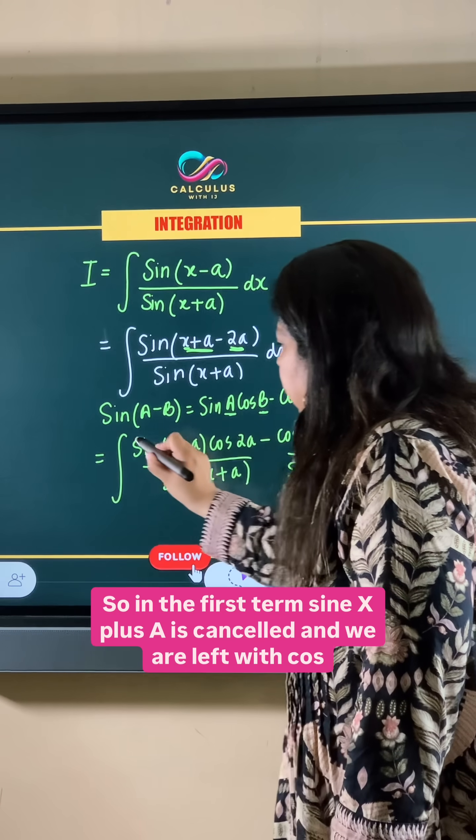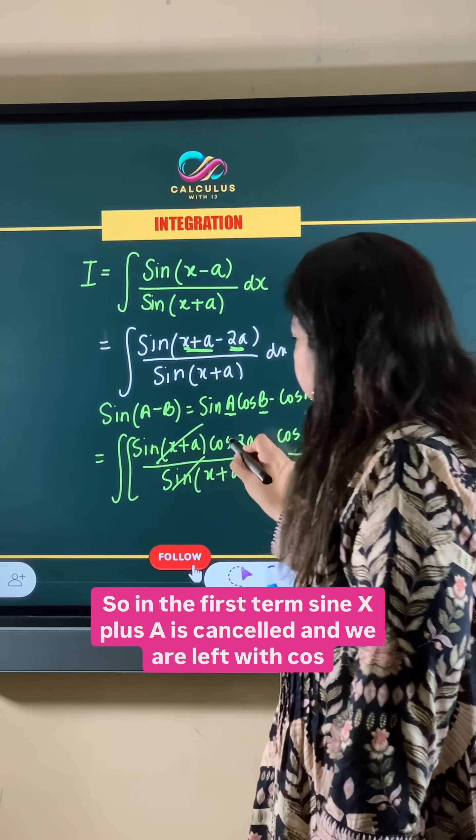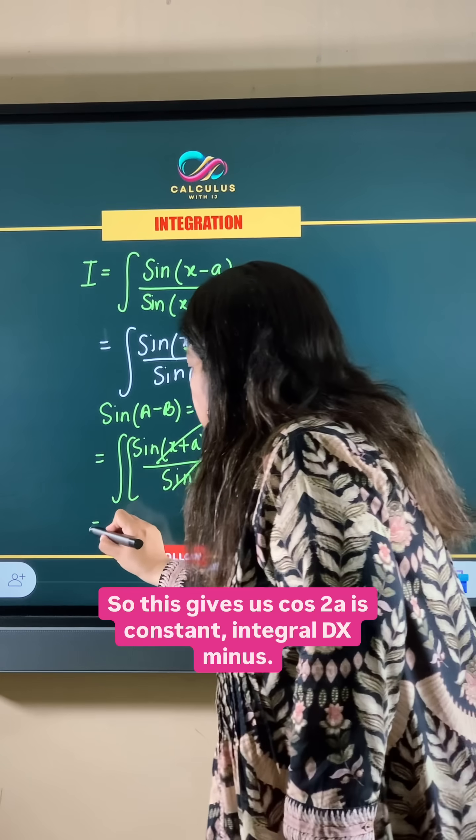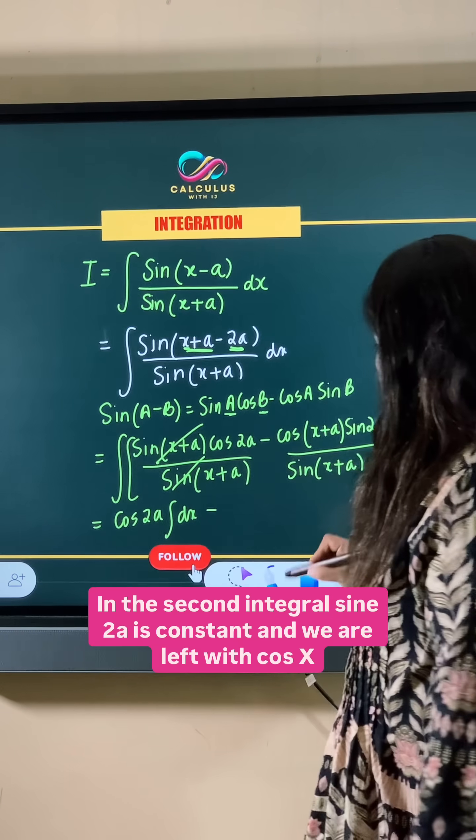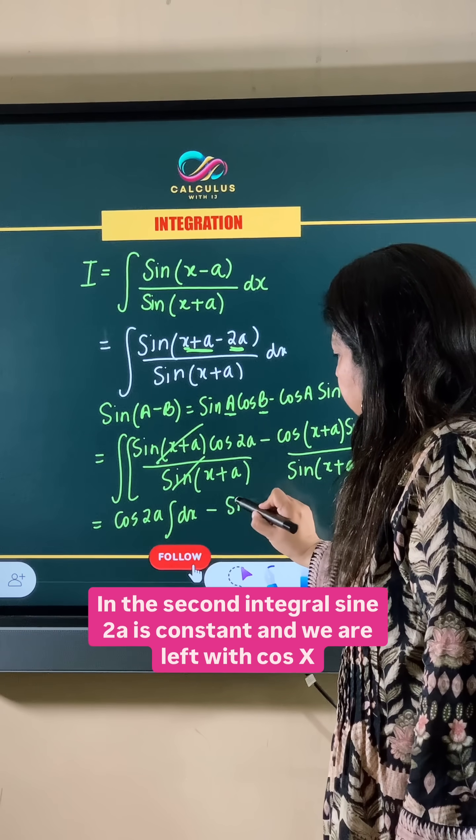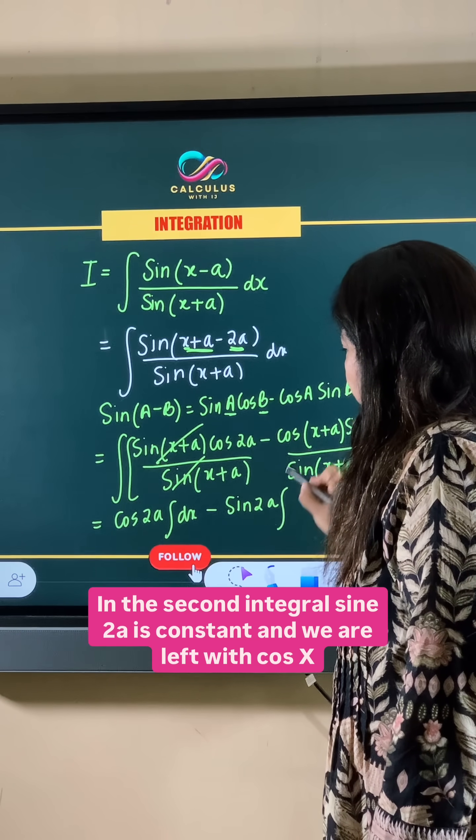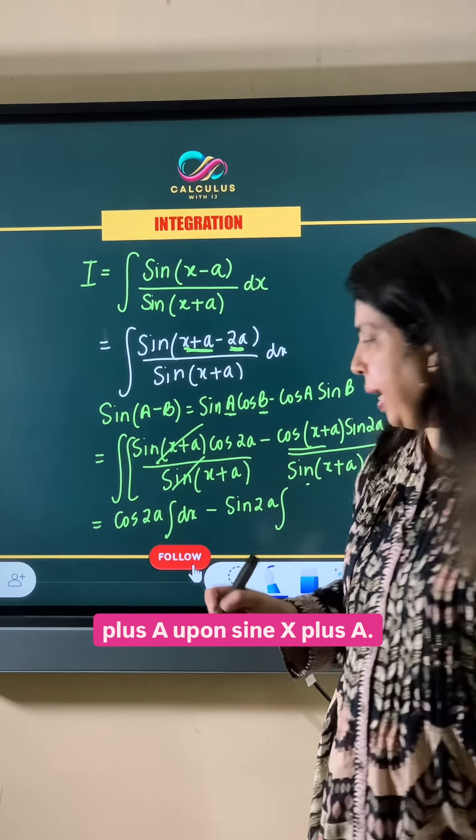So in the first term, sine x plus a is cancelled and we are left with cos 2a. This gives us cos 2a is constant, integral dx minus. In the second integral, sine 2a is constant and we are left with cos x plus a upon sine x plus a.